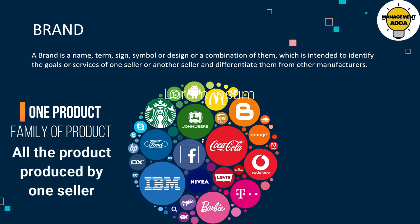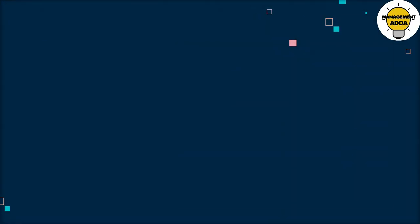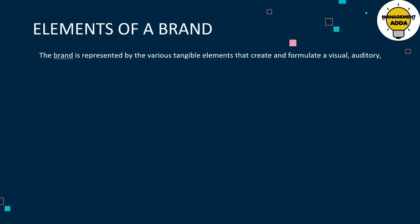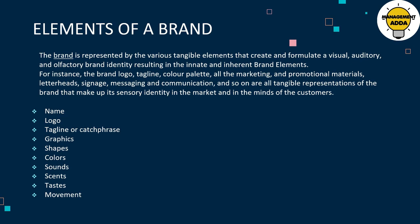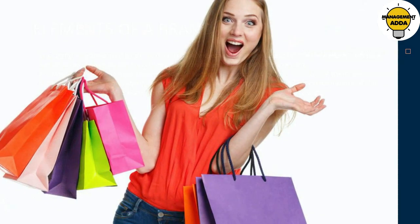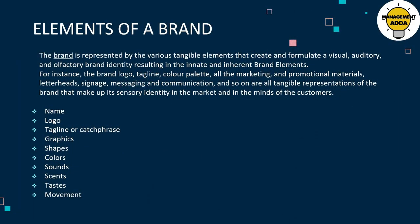Now let's see the elements of a brand. A brand is represented by various tangible elements in the form of audio and visual, which impact the customer's mind. Whenever a customer needs to buy any product, these elements impact the customer's mind and influence their purchasing behavior.